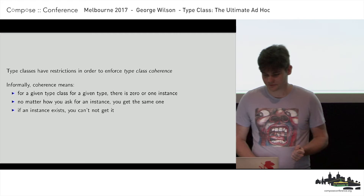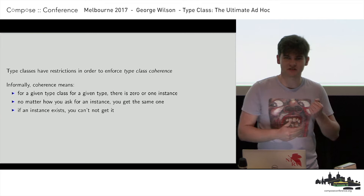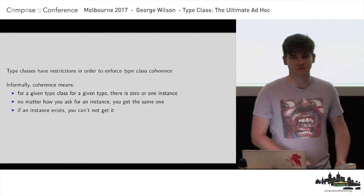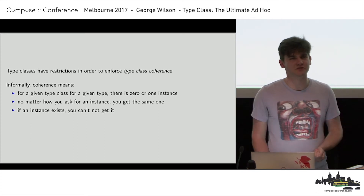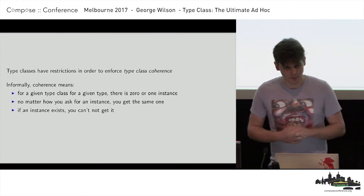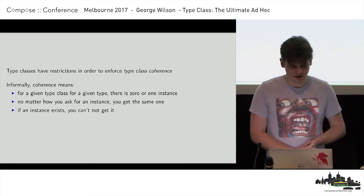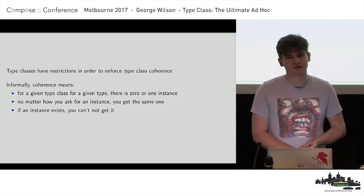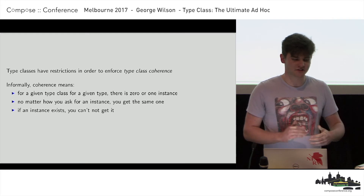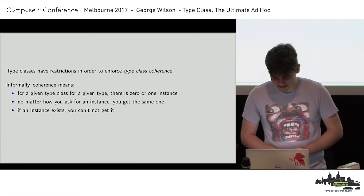No matter how you ask for an instance, you will always get the same one. And if an instance exists, you can't not get it if you ask for it. So you can't forget an import and miss your type class instance, or reorder your imports and have something go wrong. Either your code does what you expected, or it doesn't compile — which is really useful. I like that property.